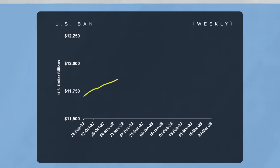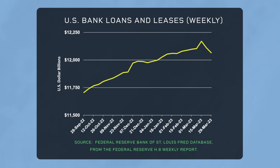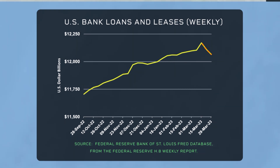Indeed, the increase in interest rate risk associated with an inverted yield curve has already negatively disrupted the banking sector. U.S. bank lending slowed noticeably in the weeks following the failure of several banks in early March. While bank credit is not a reliable indicator, the current lack of loan growth does suggest that the interest rate policy is having an impact.